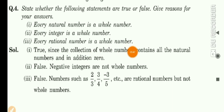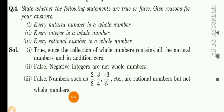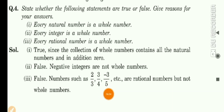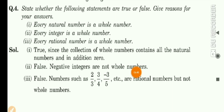The third part is: every rational number is a whole number. Rational number means a value you can write in p upon q form, where q is not equal to 0. Whole numbers are 0, 1, 2, 3, 4, 5 — we don't include any fraction part. But in rational numbers we can write any value in fraction form, so the third part is false. Numbers such as 2 upon 3, 3 upon 4, minus 3 upon 5 are rational numbers but not whole numbers. Rational numbers include any number in p upon q form, while whole numbers go from 0 to infinity in counting values. Thank you for watching.